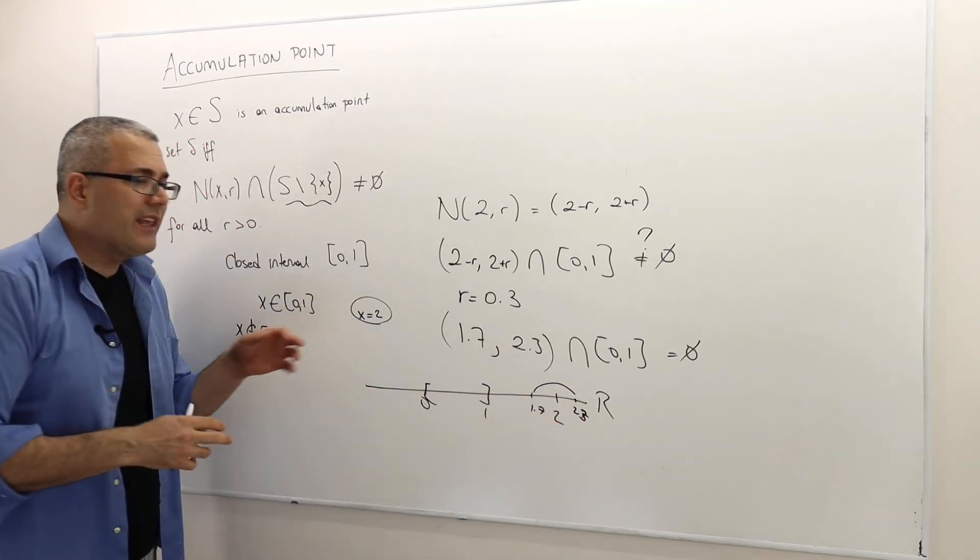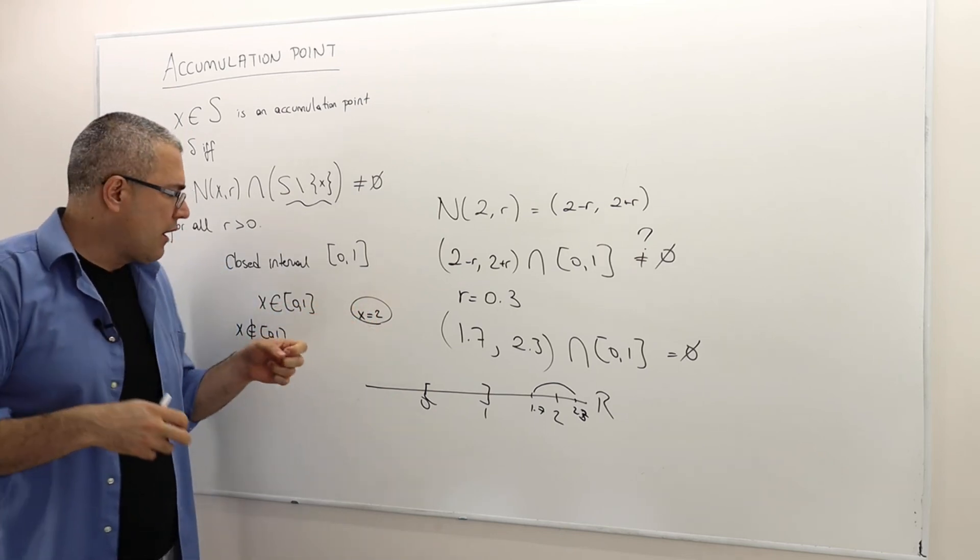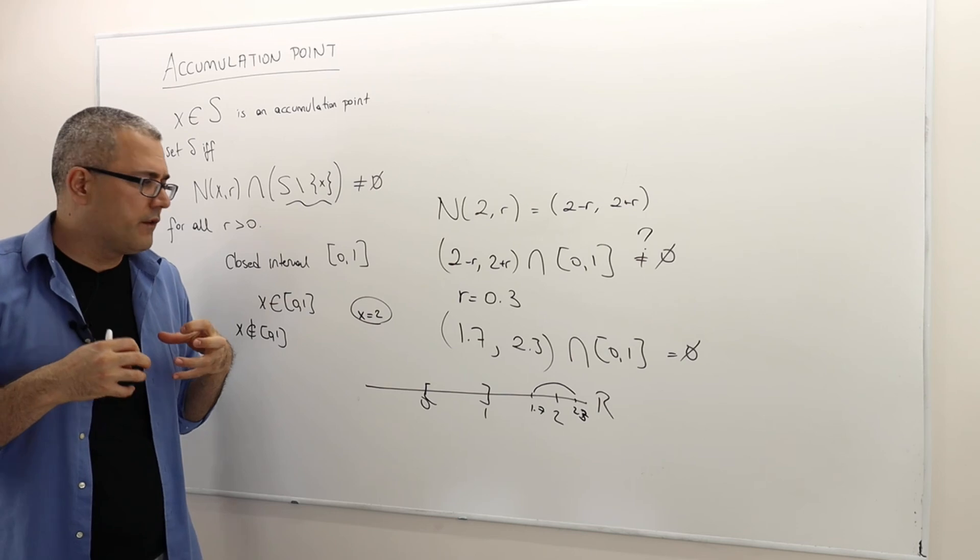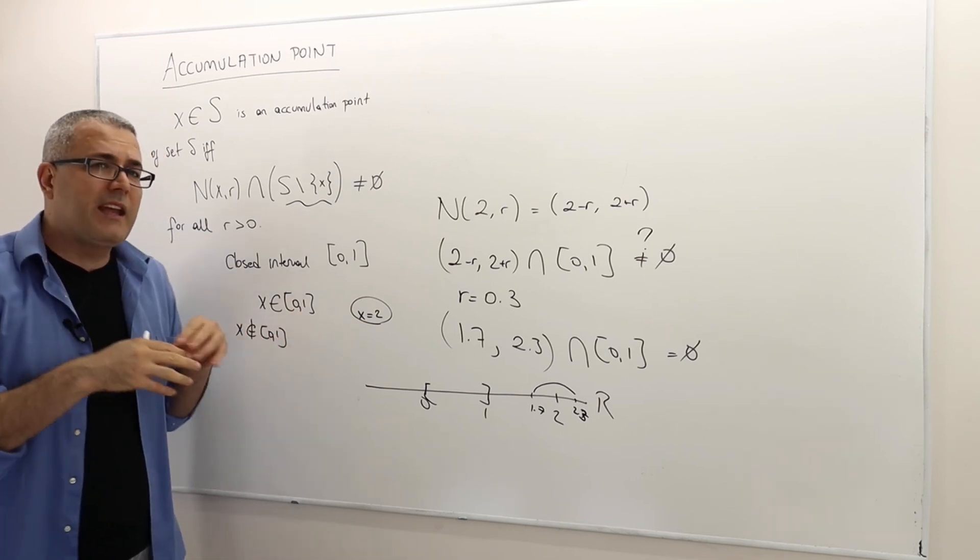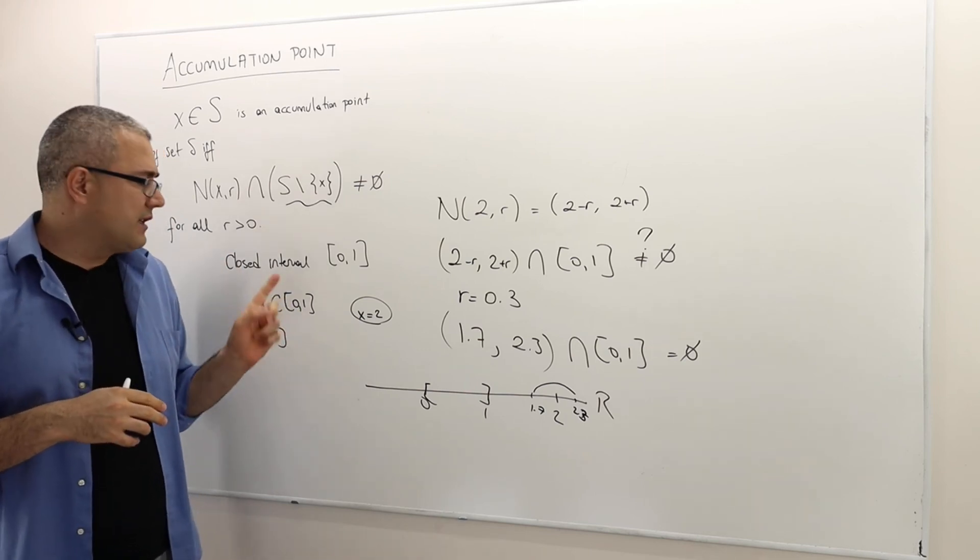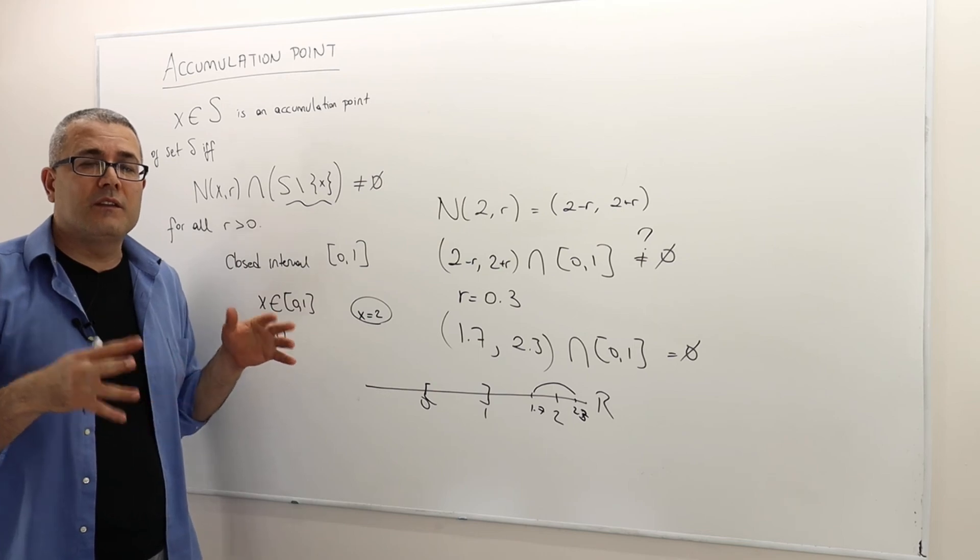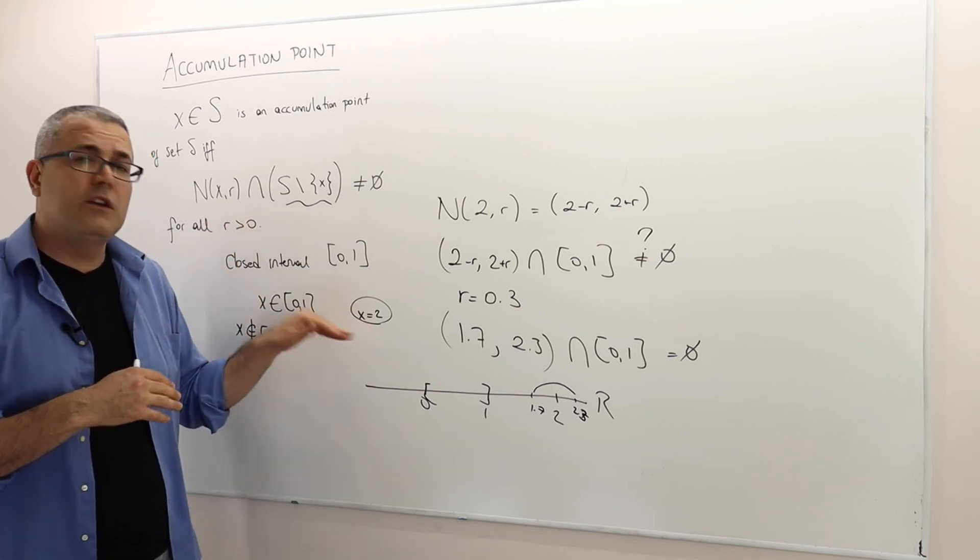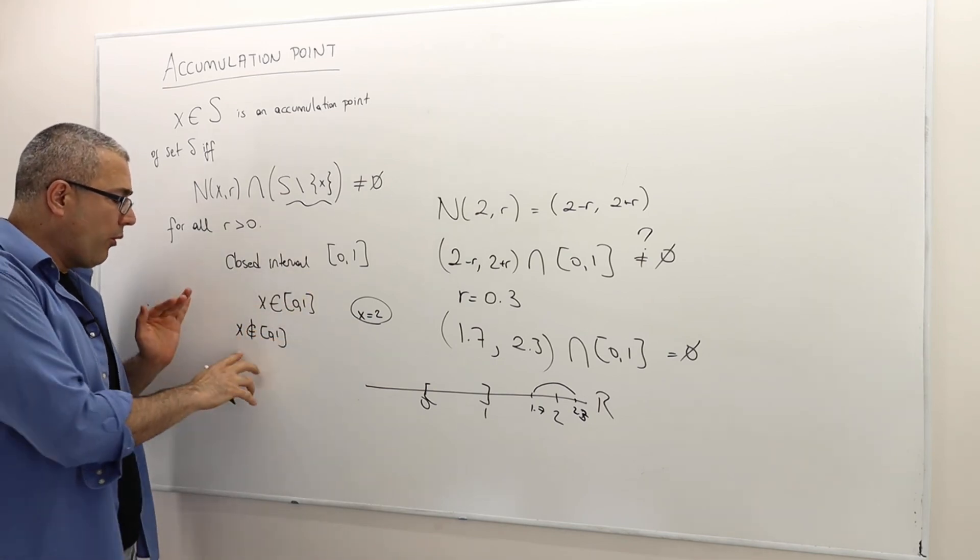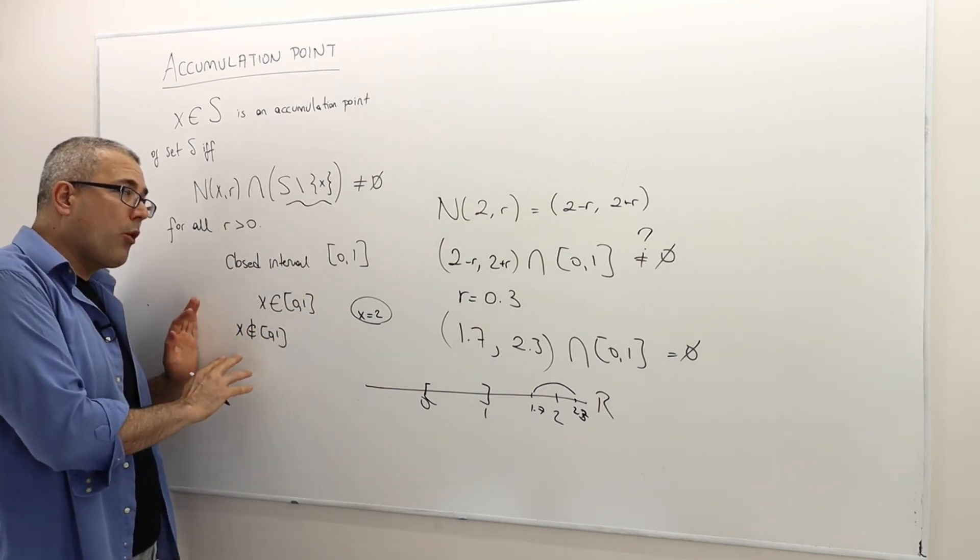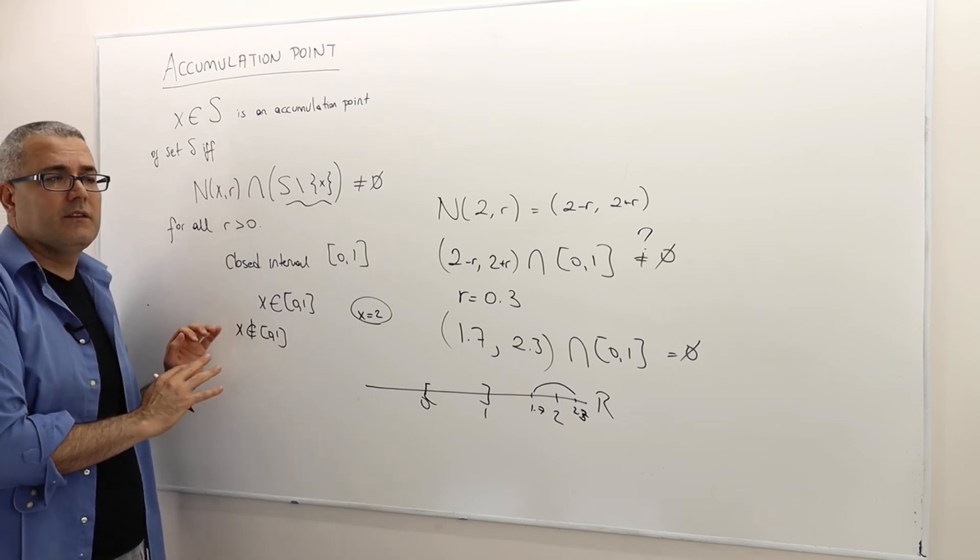So what does that mean? That means I can isolate the number 2 from this set, [0, 1] interval. But as you will sort of discuss later, you can't isolate a point, for example, 1 or 0.05 from this set. And so there are accumulation points of this set. But 2 is not. In fact, any point outside of the [0, 1] closed interval is not an accumulation point of this set.